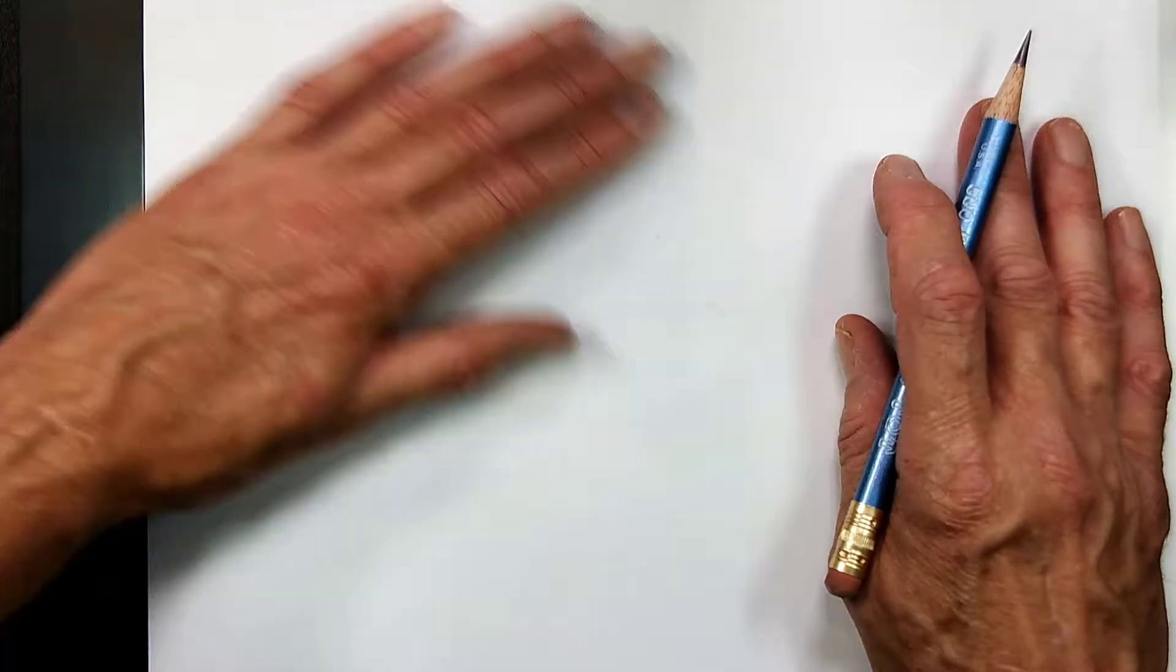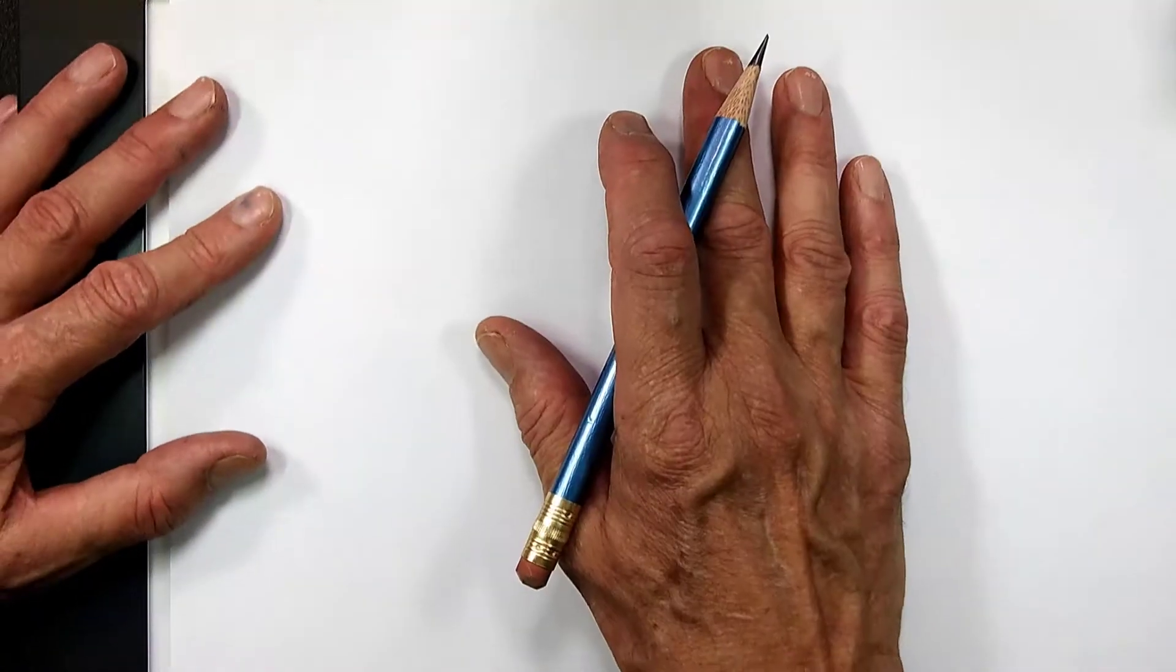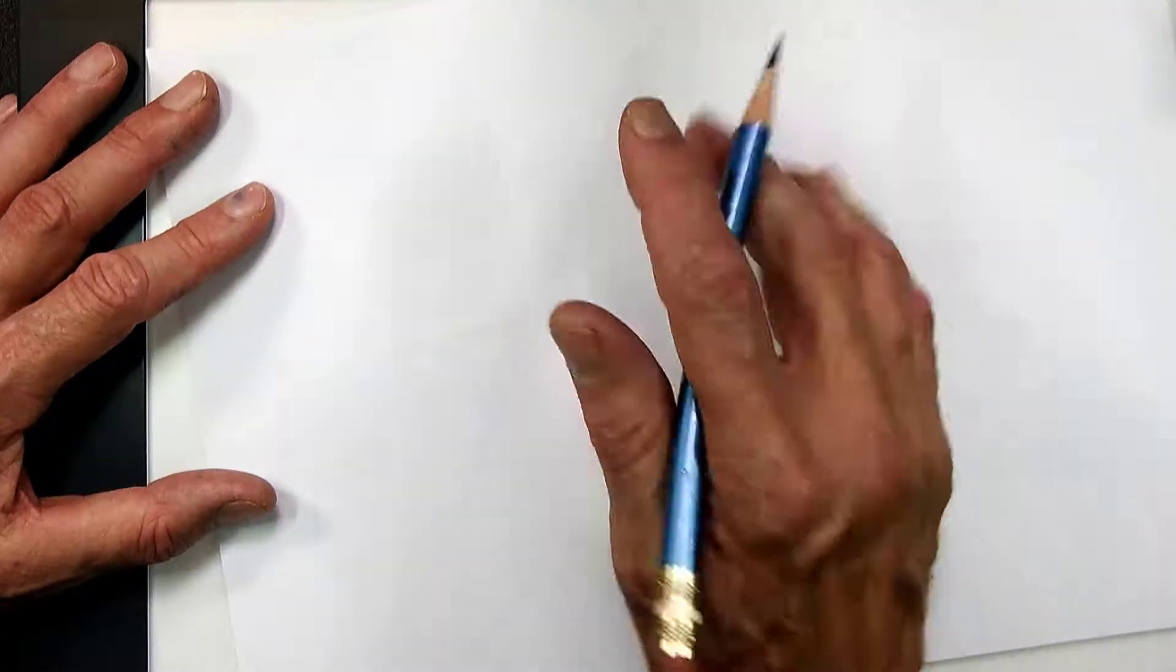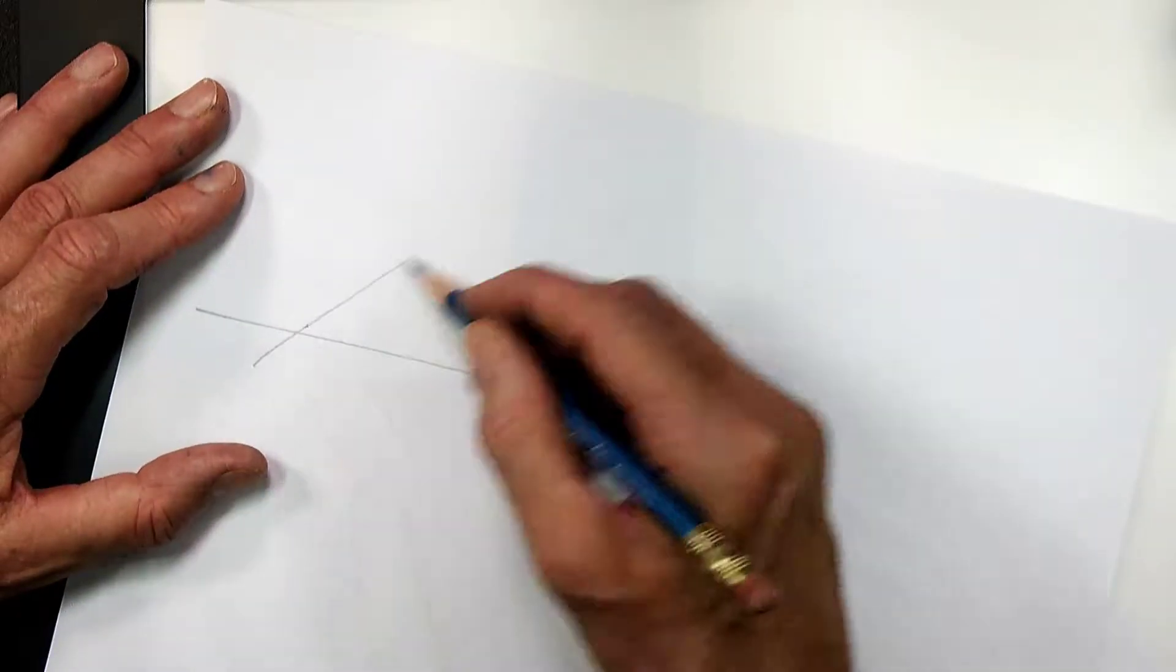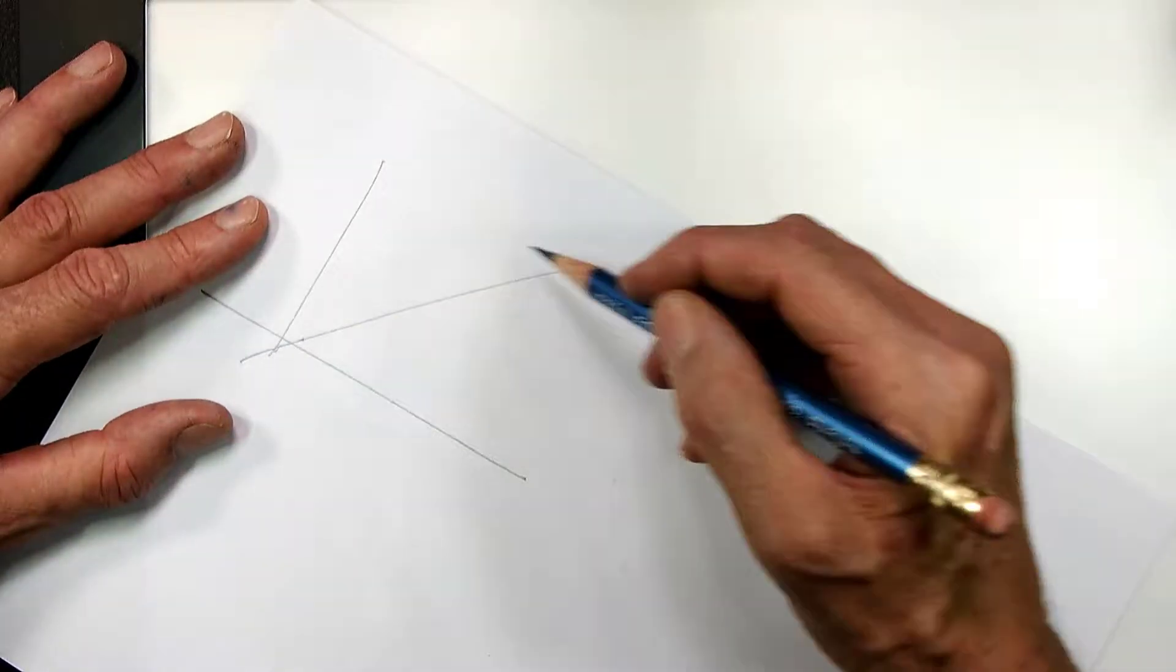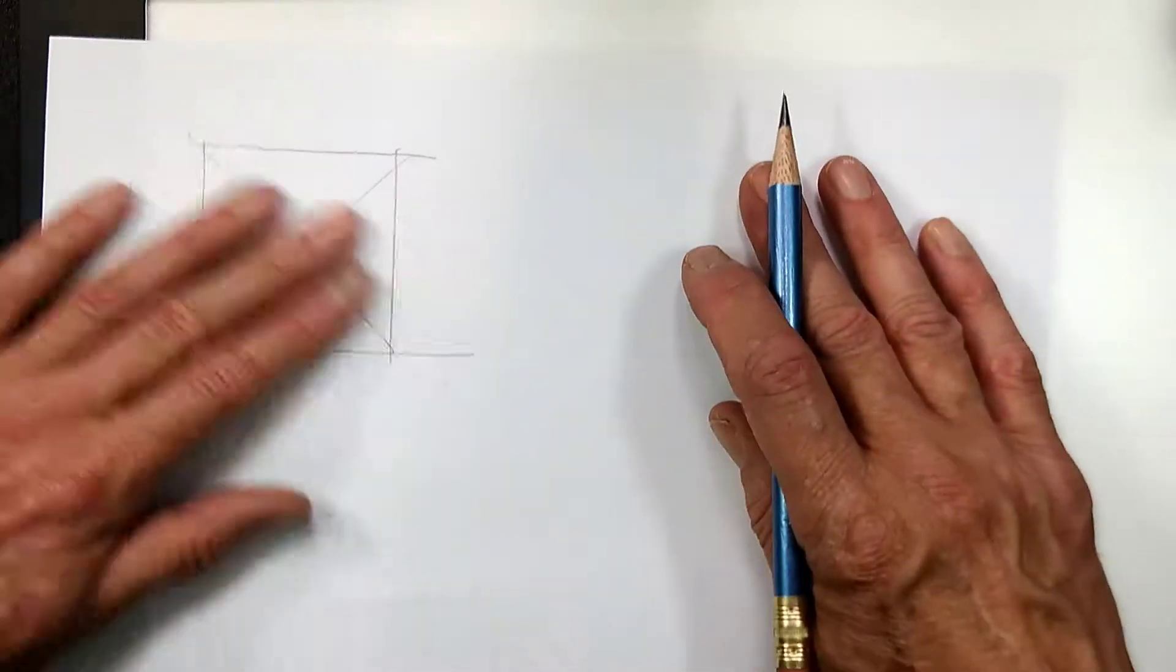So let's start with a cube. We always start with the top orthographic view. So for a cube, the top orthographic view is a square obviously.